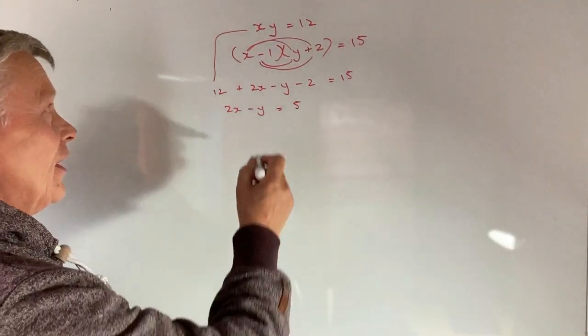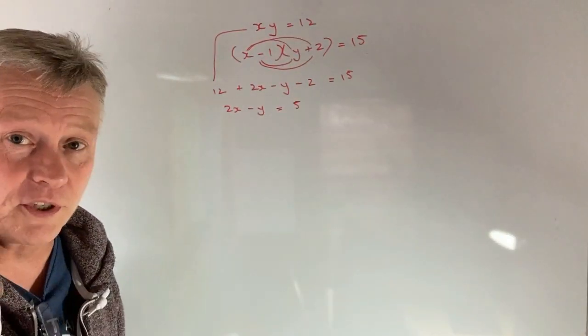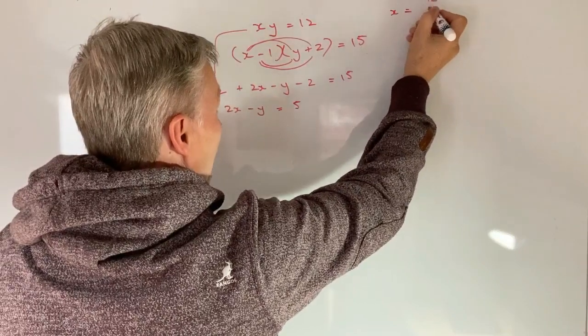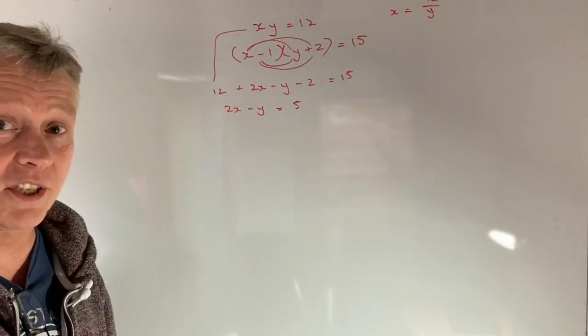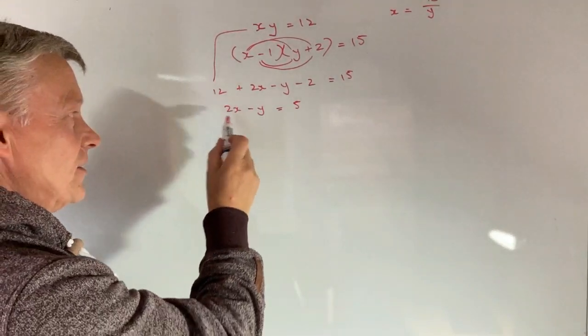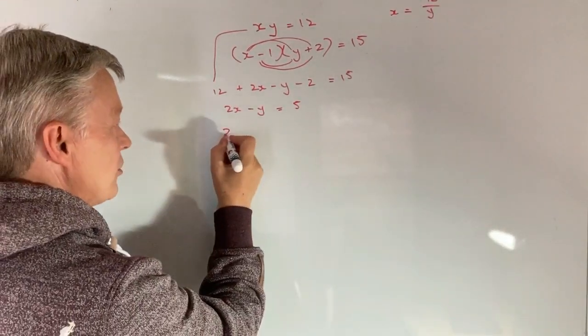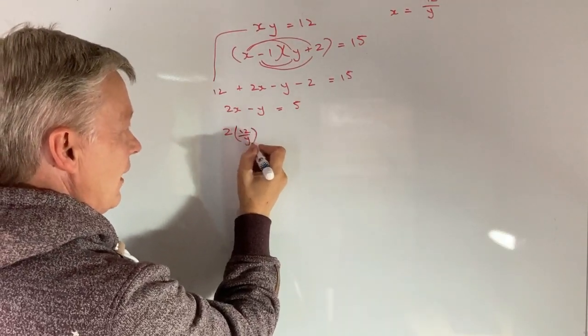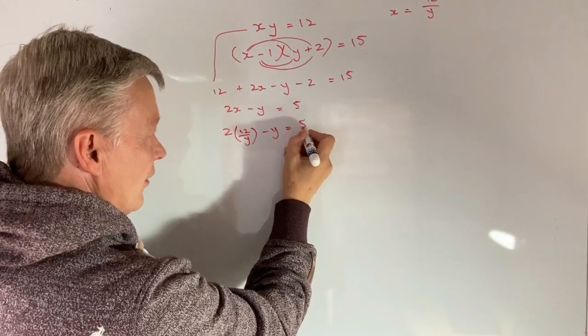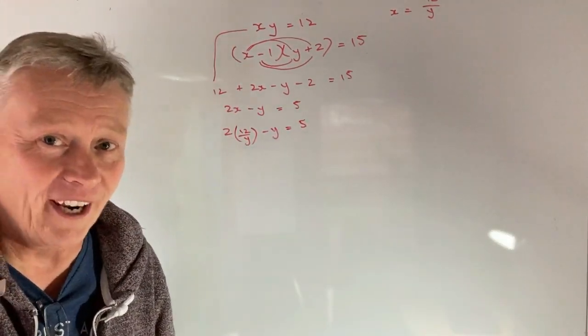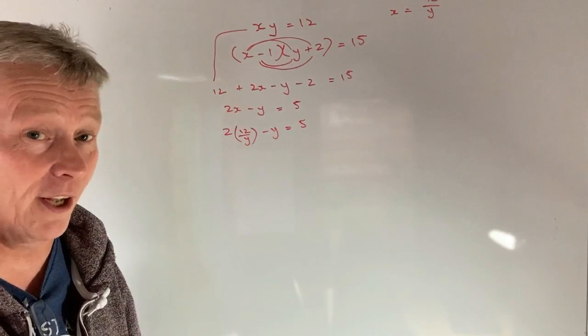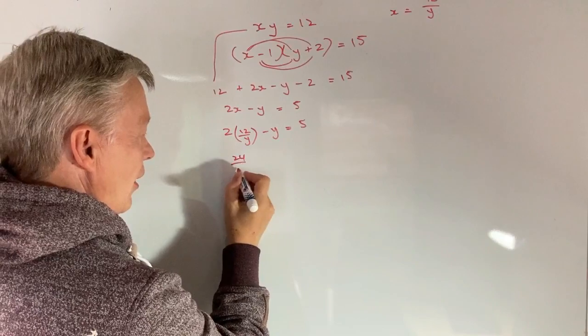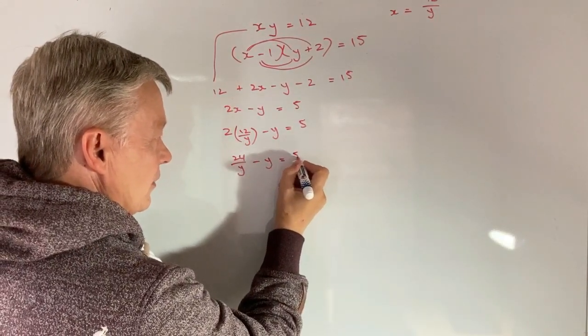So this is the simplest form that we can get to. And the next thing we can do is we can actually say, well, we're going to substitute the value of x into this particular equation. The way we're going to do that is we're going to say, if we can go back to the first equation and we've got xy equals 12, which also means that x must equal 12 divided by y. So we can simply plug that directly into this equation.